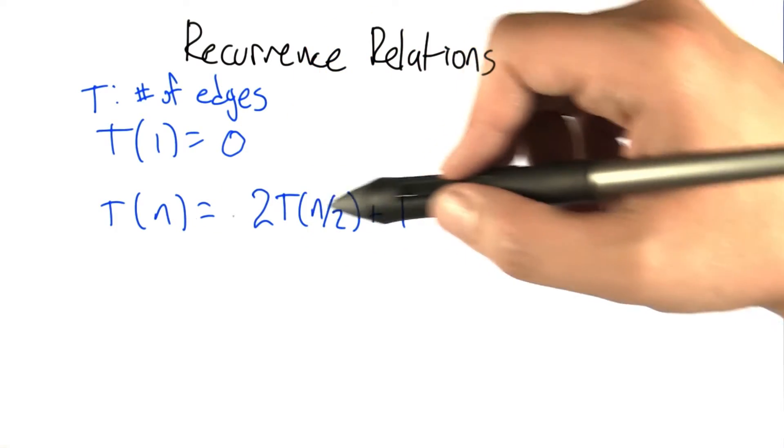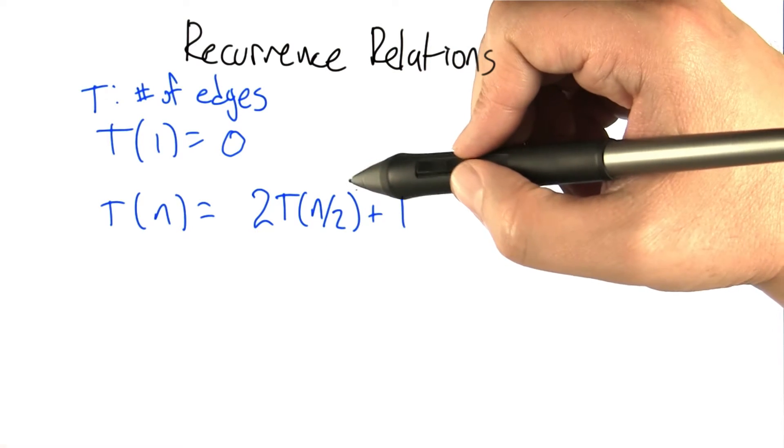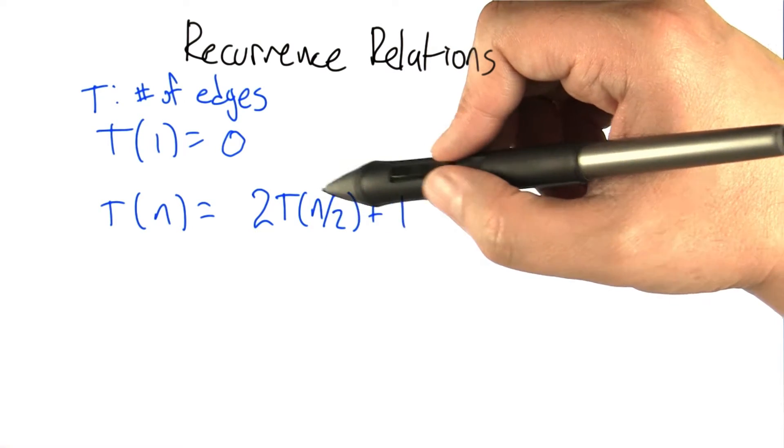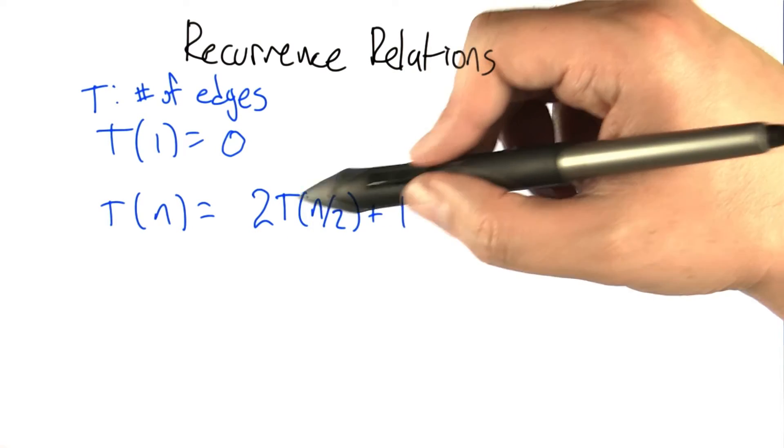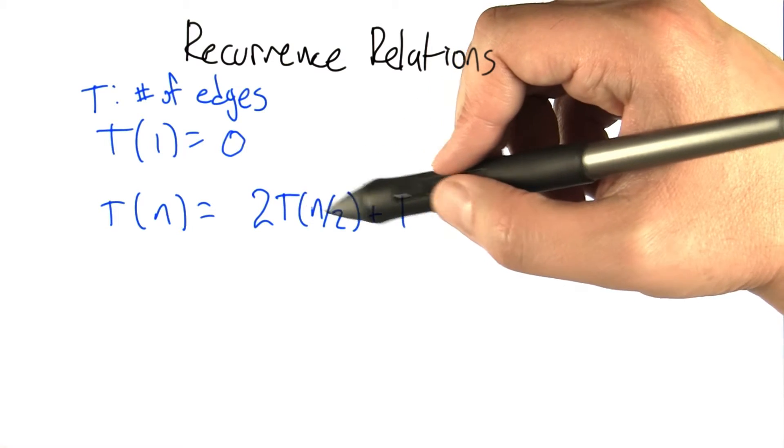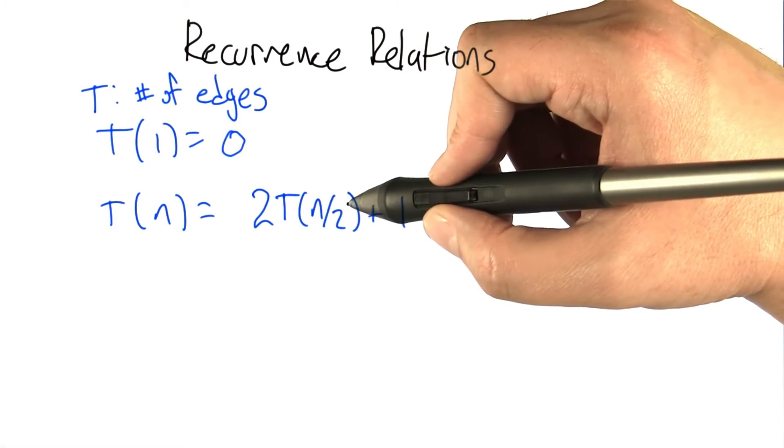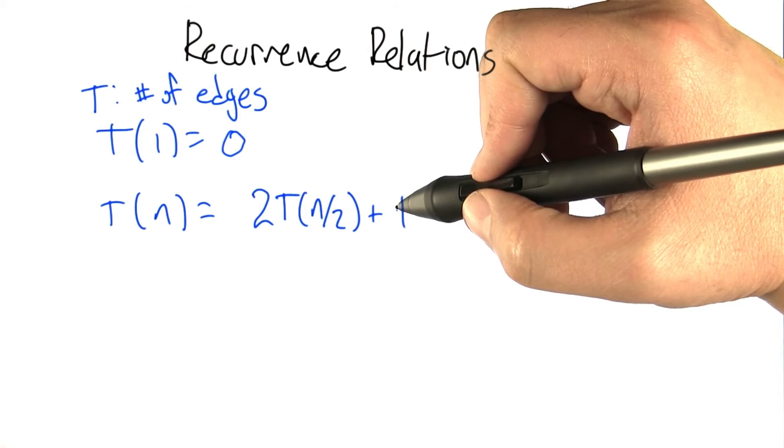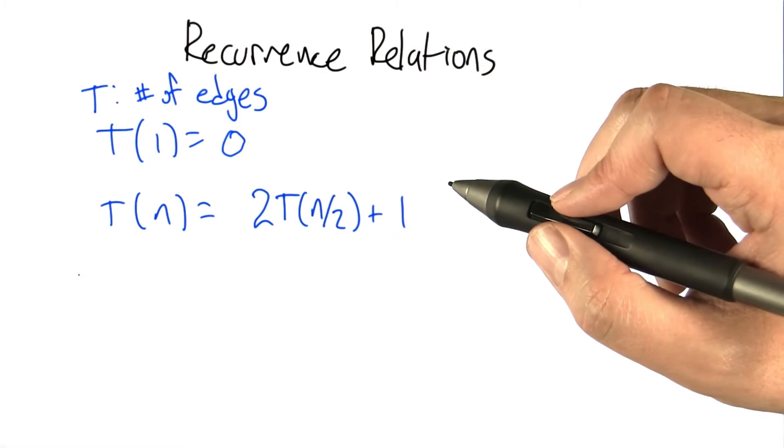If we have a graph with n nodes, what is it going to do? It's going to call the recursive generation process with n over 2 to generate however many edges it generates with that, and it's going to do that twice, so it's 2 times that. And then at the end, it's going to draw one extra edge to connect the two components together.